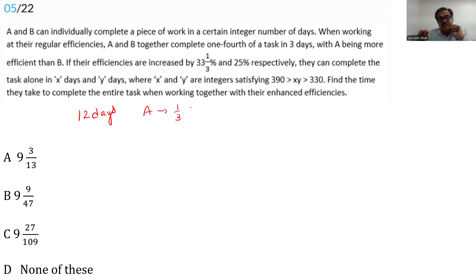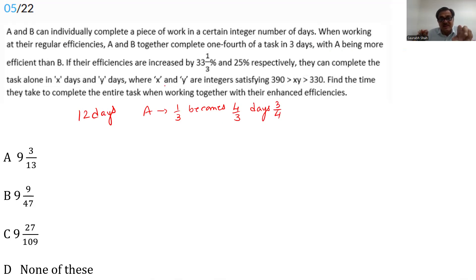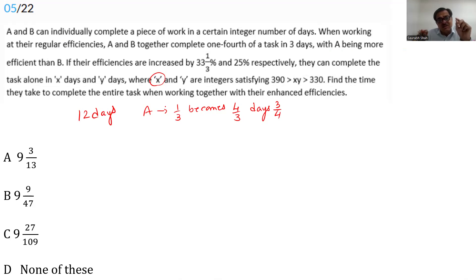If efficiency increases by one-third, it becomes 4/3. When efficiency becomes 4/3, the number of days becomes 3/4. So the days of A will be (3/4)x, which must be an integer. This means x must be divisible by 4. A's days are more than 12 and less than 24.